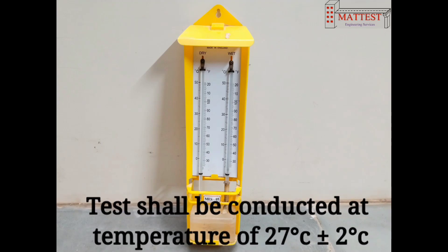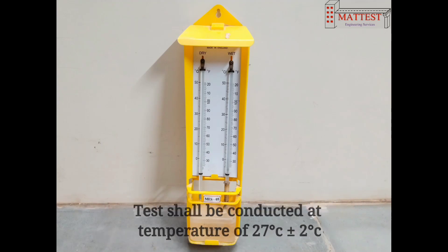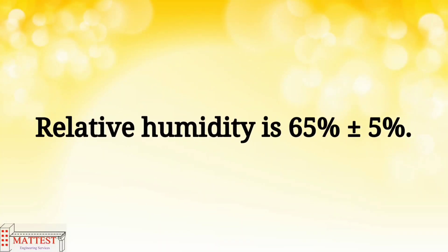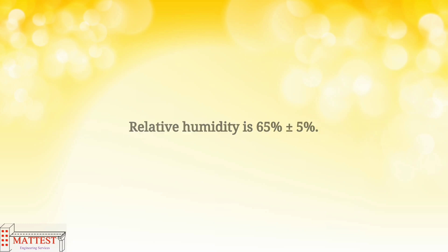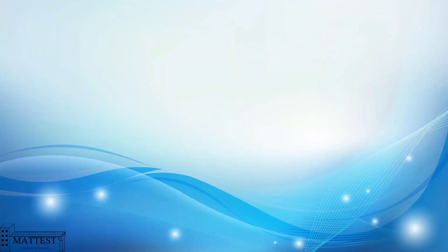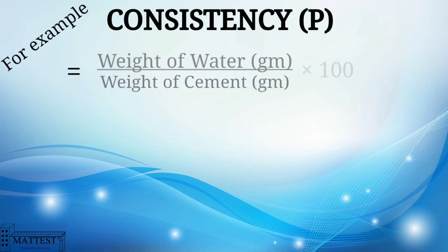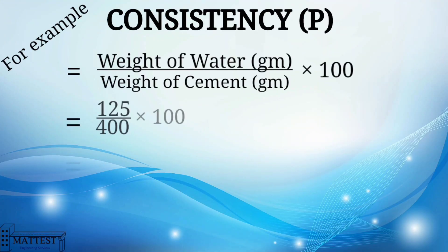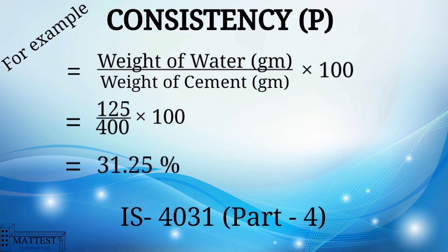Before starting the test, we should maintain the room temperature at about 27 degrees Celsius plus or minus 2, and we should maintain the relative humidity at 65% plus or minus 5. We should calculate the consistency of cement from the equation given in IS-4031 part 4.